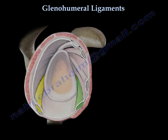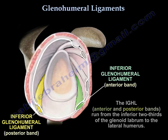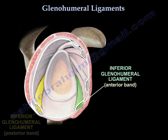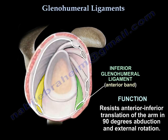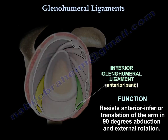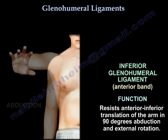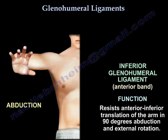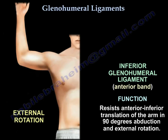The inferior glenohumeral ligament has two bands — the anterior and posterior band — and it runs from the inferior two-thirds of the glenoid labrum to the lateral humerus. The anterior band of the inferior glenohumeral ligament resists anterior-inferior translation of the arm in 90-degree abduction and external rotation.